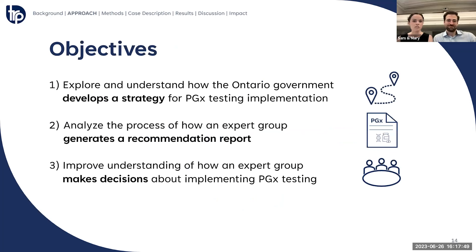To help us answer these research questions, we set three main objectives. First, to explore and understand how the Ontario government develops a strategy for PGX testing implementation. Second, to analyze the process of how the group generates a recommendation report. And thirdly, to overall improve the understanding of how expert groups make decisions about implementing PGX at a system level.